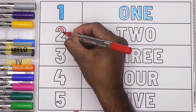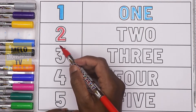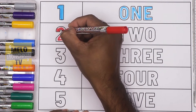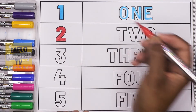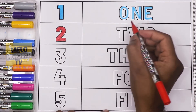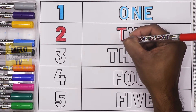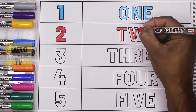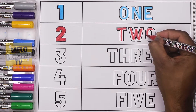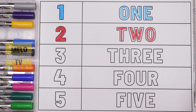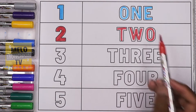Next, I'll take red color to write number two. This is number two, and the spelling is T-W-O. Two.